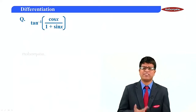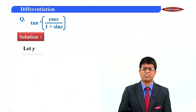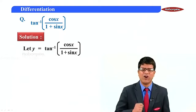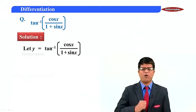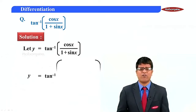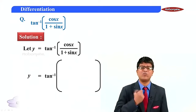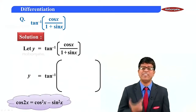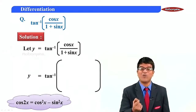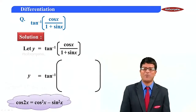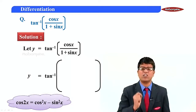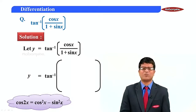Let us solve one more problem: tan inverse of cos x upon 1 plus sin x. For cos x, we use the formula cos 2θ = cos²θ − sin²θ, so cos x can be written as cos²(x/2) minus sin²(x/2).